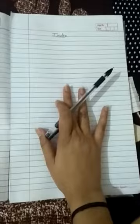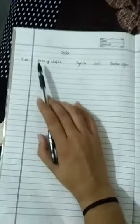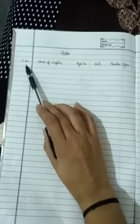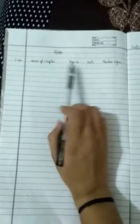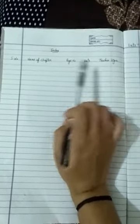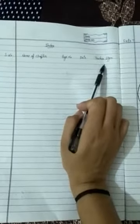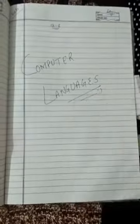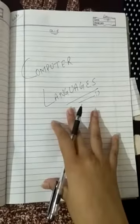On the second page, you have to make the index. In the index, you have to write the serial number, name of chapter, page number, date, and teacher sign.